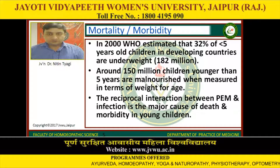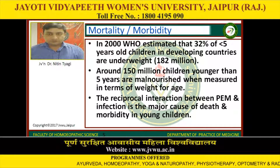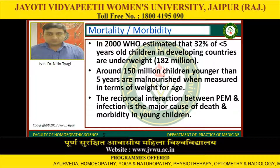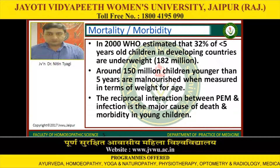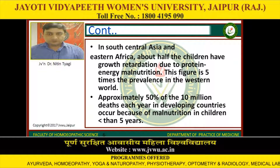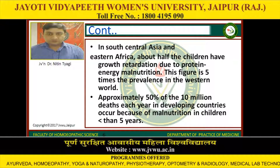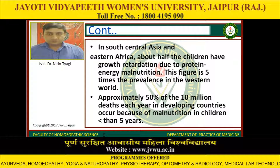In 2000, WHO estimated that 32% of less than 5 years old children in developing countries are underweight, i.e. 182 million. Around 150 million children younger than 5 years are malnourished when measured in terms of weight for age. The reciprocal interaction between PEM and infection is the major cause of death and morbidity in young children. In South, Central Asia and Eastern Africa, about half of the children have growth retardation due to protein energy malnutrition. This figure is 5 times the prevalence in the Western world.